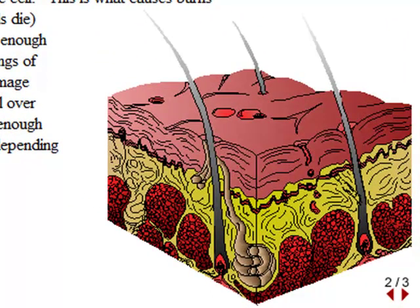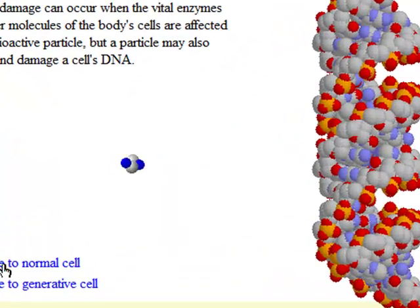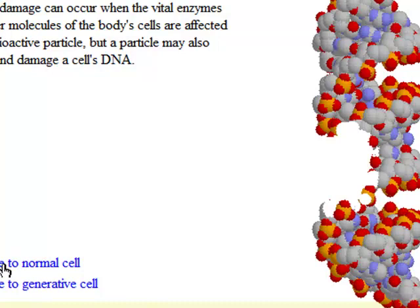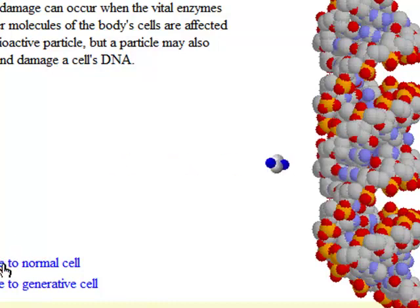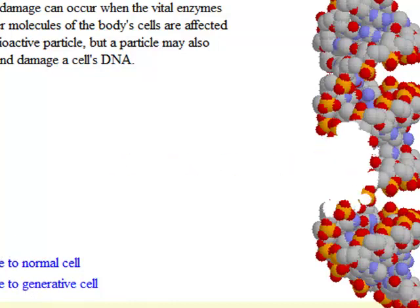Effects of mild radiation may not appear for years. For example, leukemia rates increase after periods of about 20 years. Genetic damage occurs to our generative cells that can lead to cancers or genetic defects passed on to our offspring as birth defects.